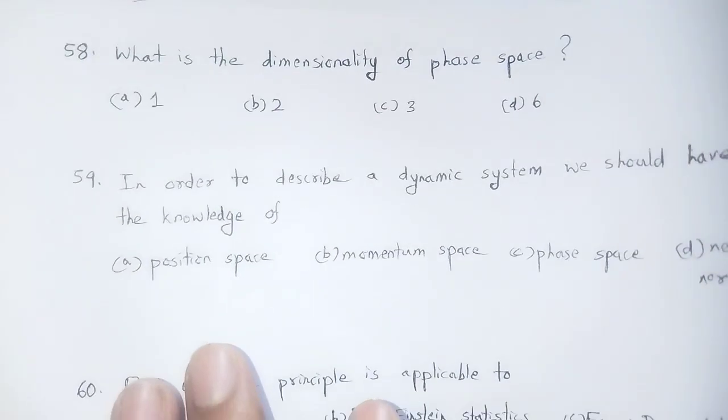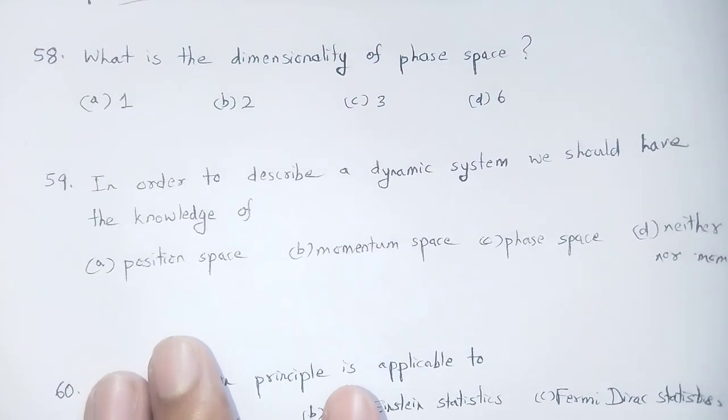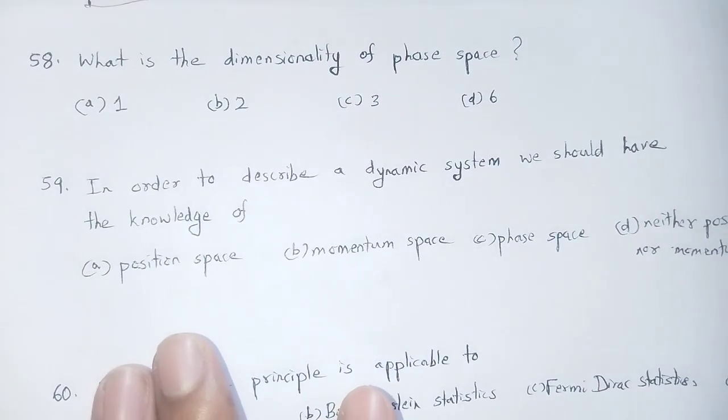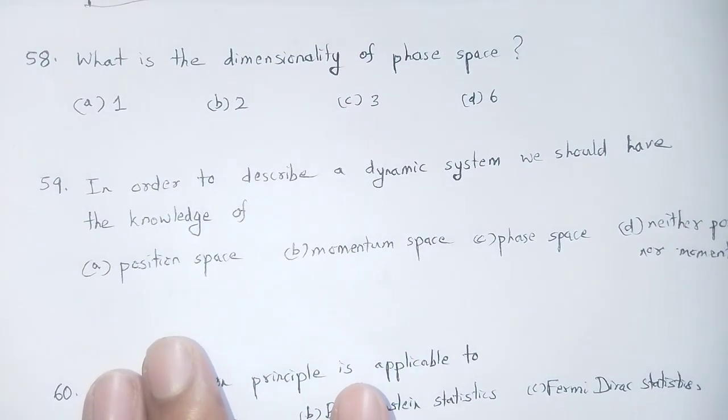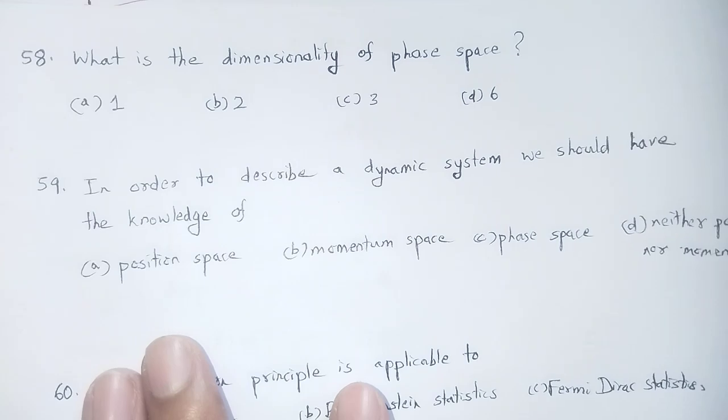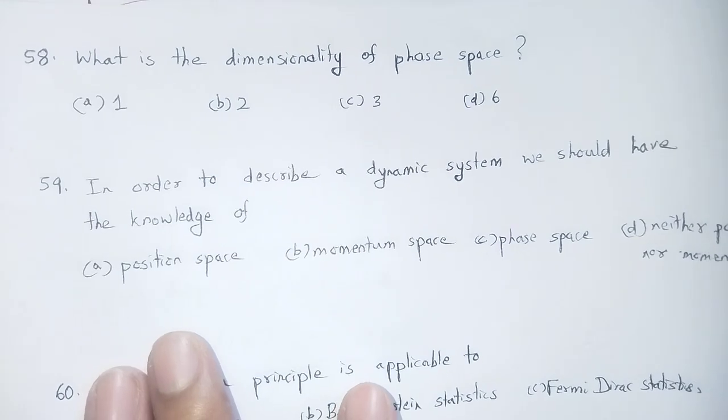Question number 58: What is the dimensionality of phase space? Phase space has three position coordinates and three momentum coordinates for each particle.